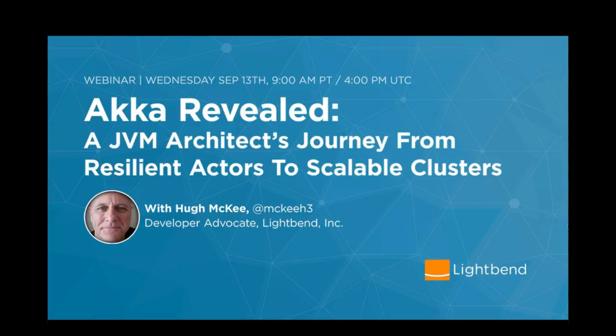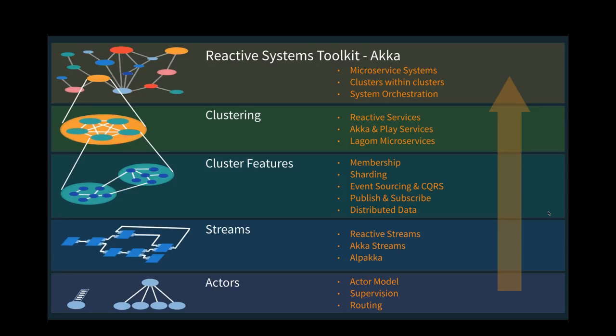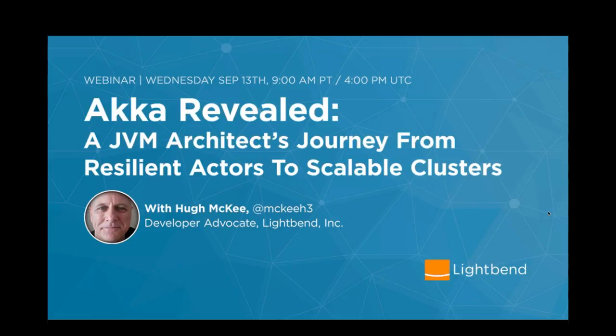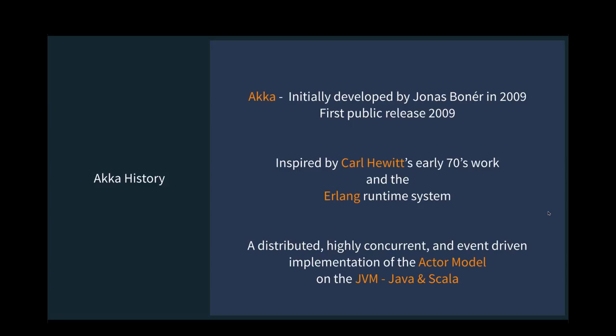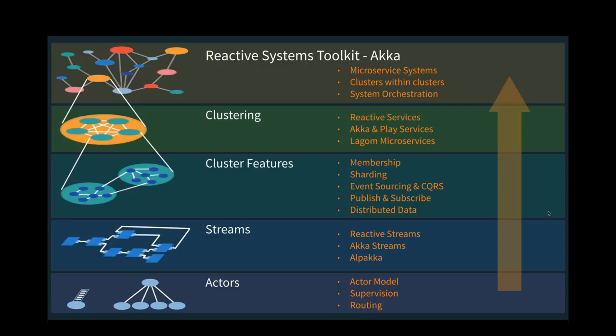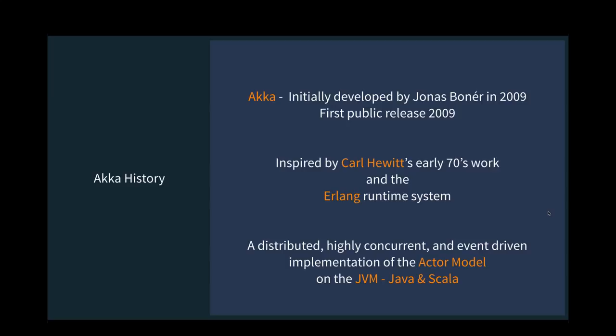As Oliver mentioned, we're going to take a tour through the ACA toolkit, working up from actors to the system level. Before we get started, just want to give a little bit of history. ACA first came to life around 2009 when Jonas Bonér started to take the ideas of an actor system — initially developed in the 70s by Carl Hewitt — and brought it to the JVM in Java and Scala.